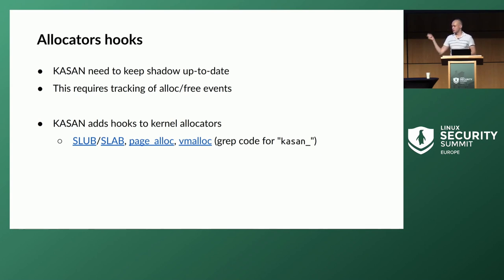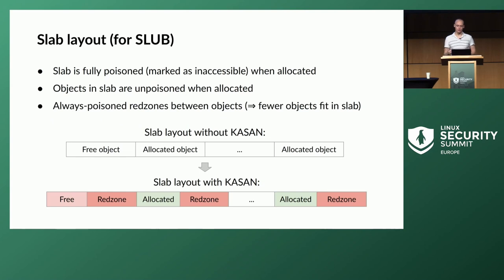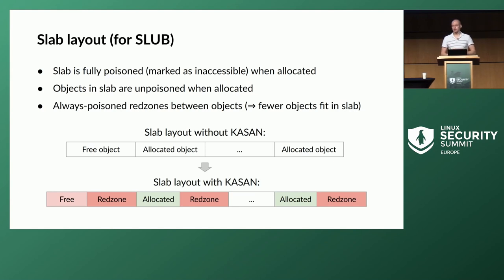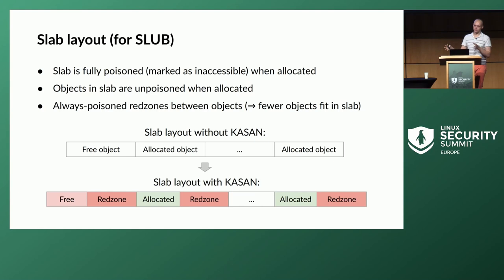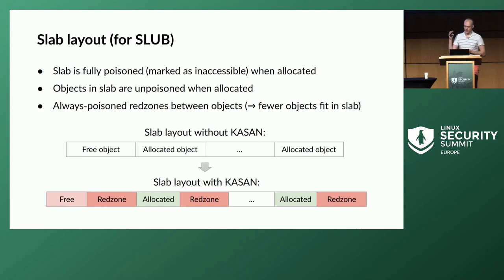KASAN adds hooks to different allocators — if you grep for kasan_ in allocator code, you'll find quite a lot of callbacks into the KASAN runtime. For the slab allocator, whenever a new slab is allocated it's fully poisoned by KASAN — marked as inaccessible in shadow memory — because all objects in it are in the freed state. When any object is allocated, it gets unpoisoned, meaning marked as accessible.